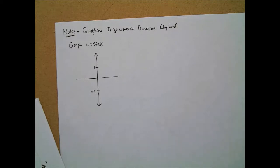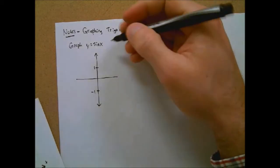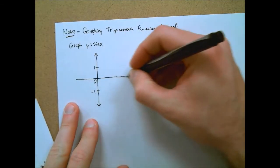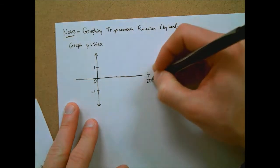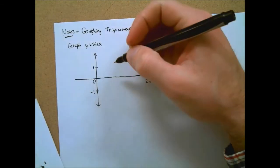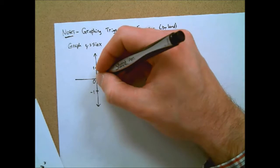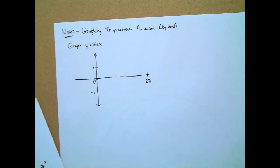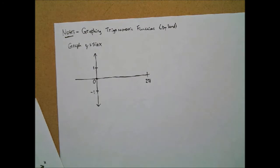For our x values, we typically choose angles between zero and two pi. So let's go from zero all the way out to two pi. Let's find some values. Sine of zero is zero, so we have a point at (0, 0) — zero away from the origin, height off the x-axis is zero. And sine of two pi is also zero. Let's go halfway between zero and two pi, which is pi — sine of pi is also zero.